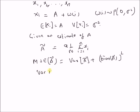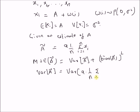The variance of ã equals the variance of a times (1/n) Σ(i=1 to n) xi — that is, the variance of a times the sample mean — which equals a² times the variance of the sample mean, which is σ²/n. So variance of ã = a²σ²/n.